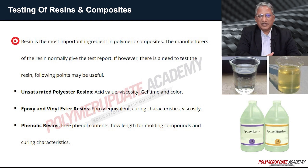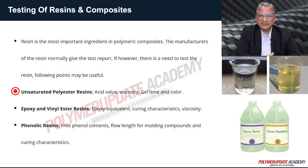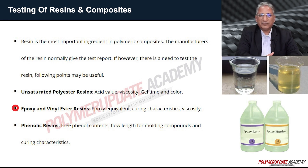If there is a need to test the resin, the following points must be considered. For unsaturated polyester resin, acid value, viscosity, gel time, and color are important. For epoxy resin and vinyl ester resin, epoxy equivalent, curing characteristics, and viscosity are important. For phenolic resin, free phenol content, flow length of molding compound, and curing characteristics are determined.